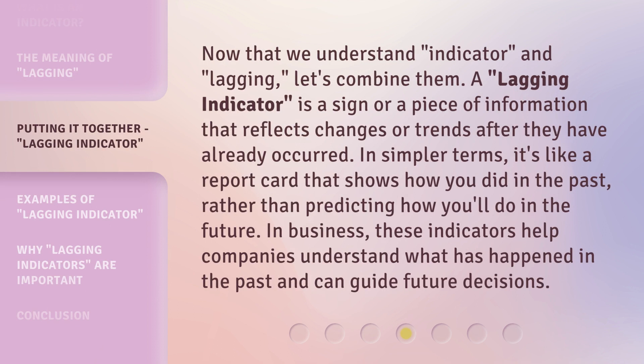Now that we understand indicator and lagging, let's combine them. A lagging indicator is a sign or a piece of information that reflects changes or trends after they have already occurred. In simpler terms, it's like a report card that shows how you did in the past rather than predicting how you'll do in the future. In business, these indicators help companies understand what has happened in the past and can guide future decisions.